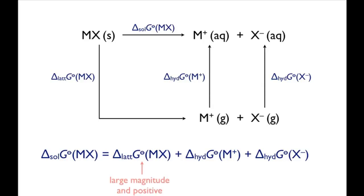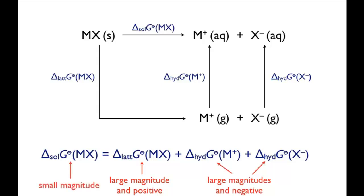The magnitudes of the lattice Gibbs energies and the Gibbs energy changes of hydration of the ions are all large, whereas that for the Gibbs energy of solvation is small. This means that only small changes in the lattice Gibbs energies or the Gibbs energy changes of hydration are needed to cause a change from compounds being soluble to being insoluble.